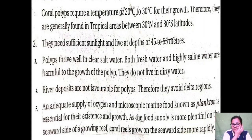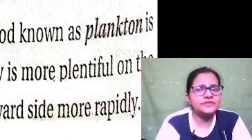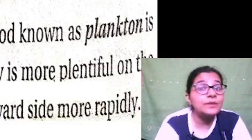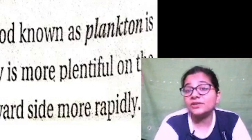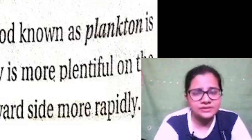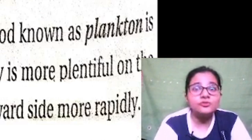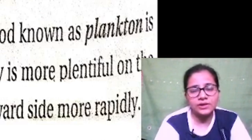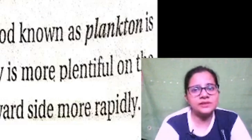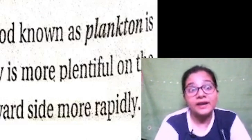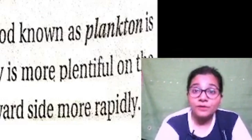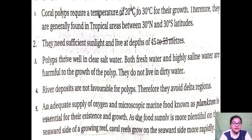The second factor: corals need sufficient sunlight and live at depths of 45 to 55 meters. Why do they need sufficient sunlight? Because the polyp has a symbiotic relationship with the zooxanthellae — an algae — which photosynthesize to produce food for the coral. If zooxanthellae does not get sunlight, it cannot photosynthesize, the polyp cannot survive, and the coral cannot form. So sunlight is essential for zooxanthellae to produce food and supply it to the polyp.